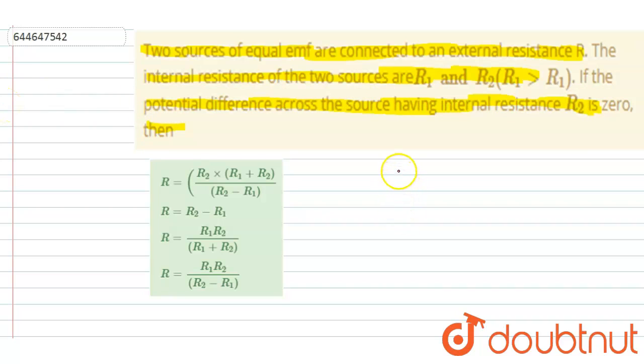So basically they are connected like this. If I see here, two external resistance R, EMF E1, EMF E2, internal resistance R1, R2.